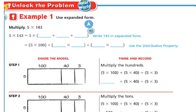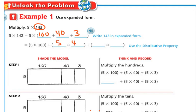Example 1. We're going to use expanded form to multiply 5 times 143. So I have my 5, and then I'm going to write the expanded form for 143. In my hundreds I have 100 plus 40 plus 3 — we did expanded form before in chapter 1. So now I'm going to multiply 5 times 100, then 5 times 40, and then 5 times 3.